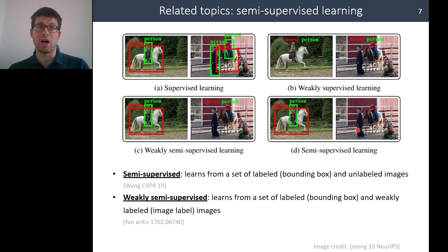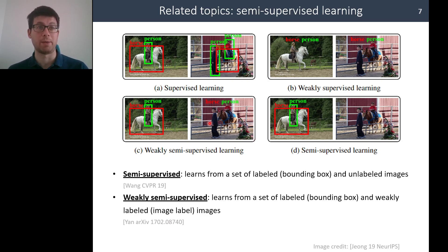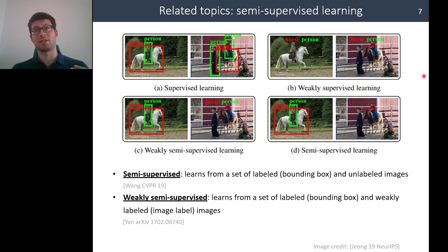A hybrid approach combines semi-supervised and weakly supervised learning: we have a set of fully labeled images with bounding boxes, and also a set of weakly labeled images with only image-level labels. Our tutorial mostly focuses on the pure weakly supervised setting.